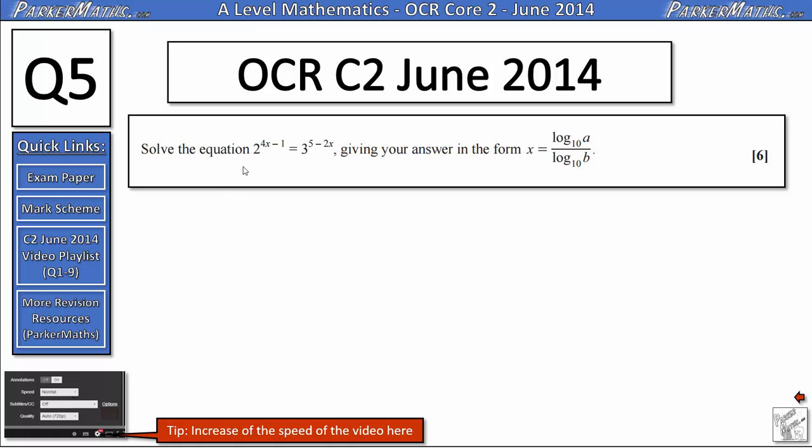In question 5 we need to solve the equation 2 to the power of 4x minus 1 equals 3 to the power of 5 minus 2x, giving your answer in the form x equals log base 10 of a over log base 10 of b.